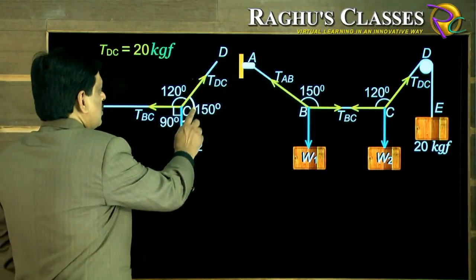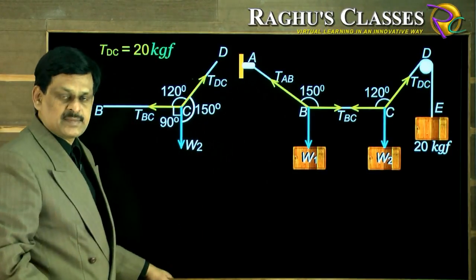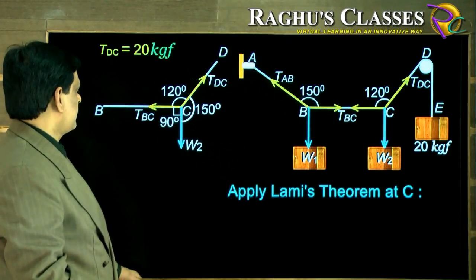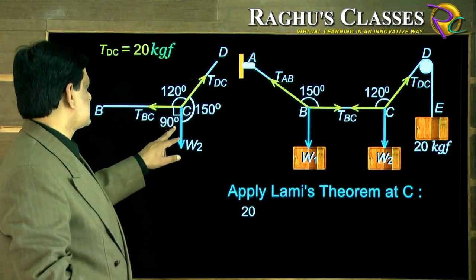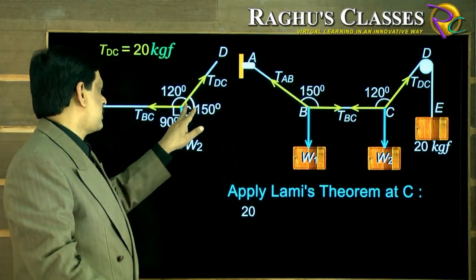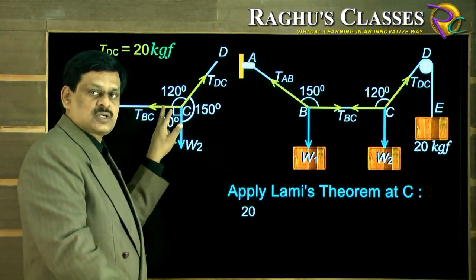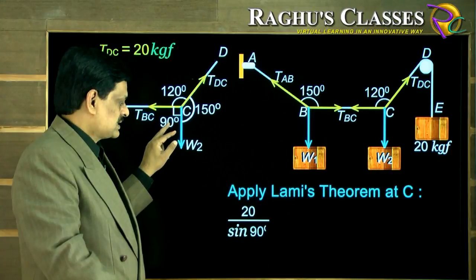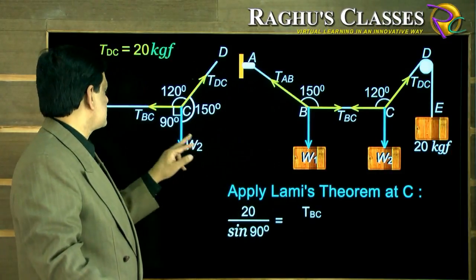Now TDC is 20 kgf, that is known. So this force is known, all the angles are known. We can apply Lami's theorem at the junction C. If you take the first force as 20, this is the known force: 20 upon sin of opposite angle.